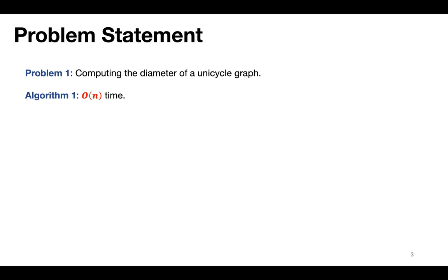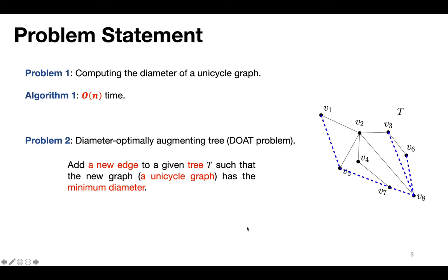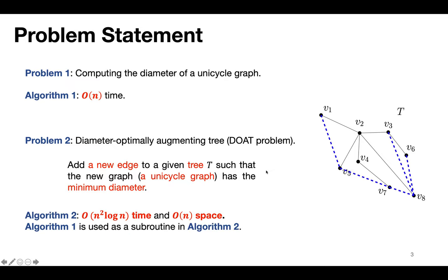In this paper, we study two problems. The first problem is computing the diameter of a unicycle graph — we give a linear time algorithm for this. The second problem is the Diameter Optimally Augmenting Tree problem, referred to as the DOAT problem, where we add a new edge to a given tree so that the diameter of the resulting unicycle graph is minimized. We give an O(n² log n) time and linear space algorithm for this problem.